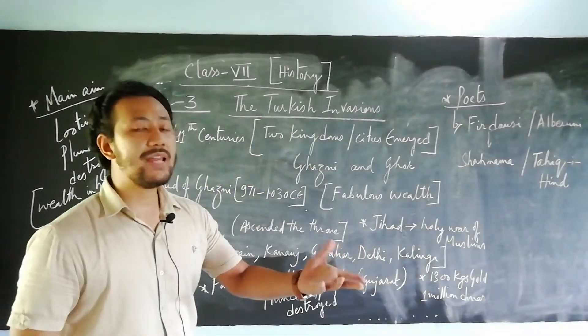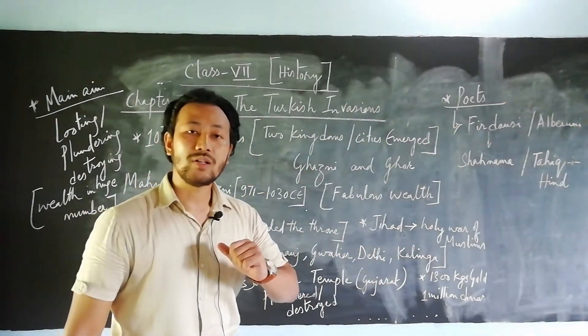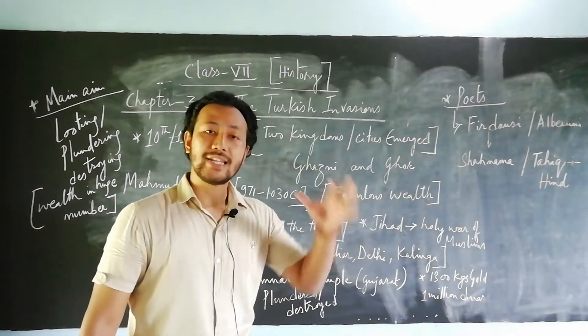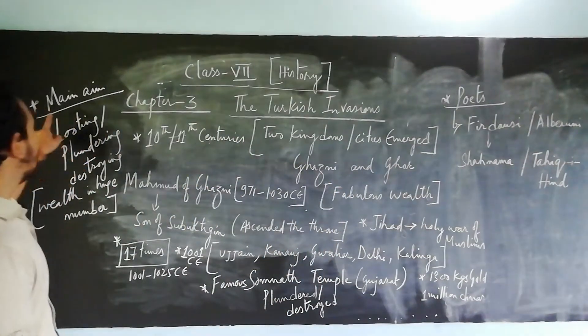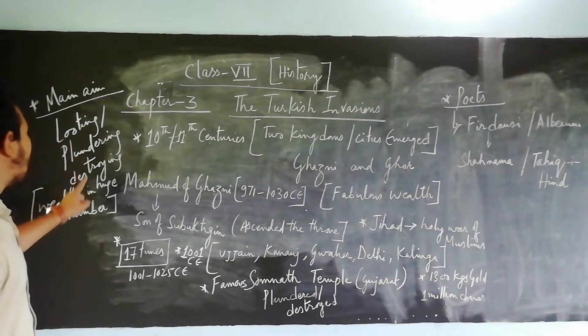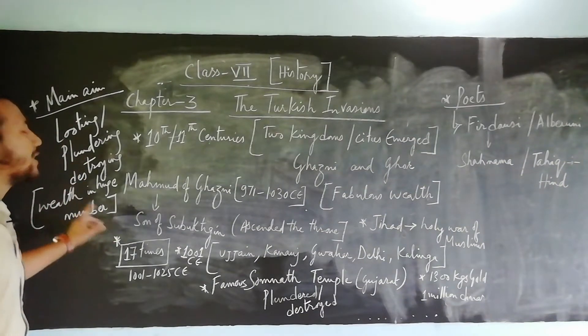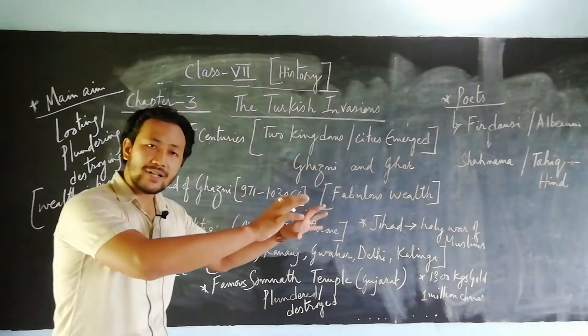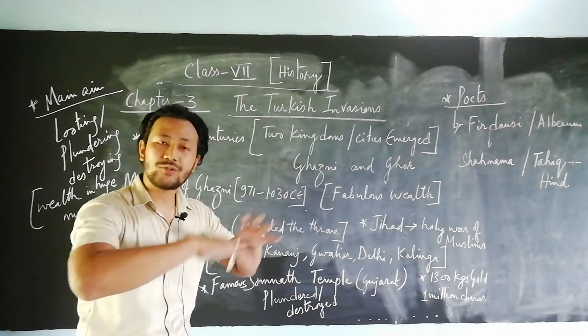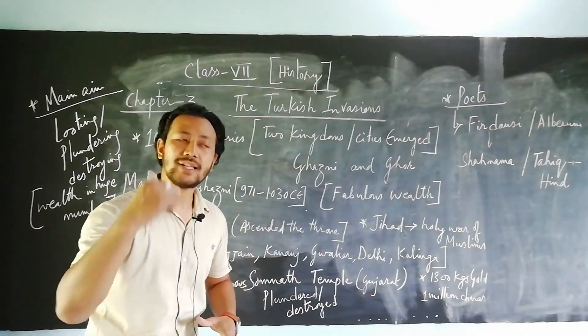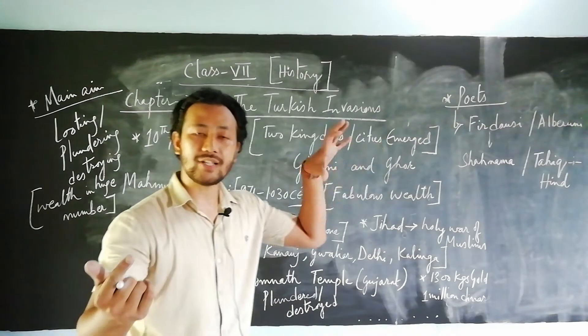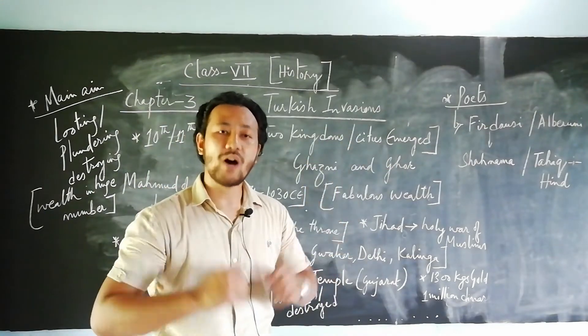Mohammed of Ghazni came to India 17 times. It's not a joke—17 times he came to India because his main aim was looting, plundering, and taking wealth in huge numbers to his own countries. With this wealth, he made his armies and kingdoms in the Arabian countries very powerful.